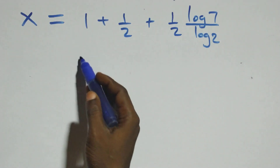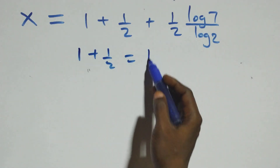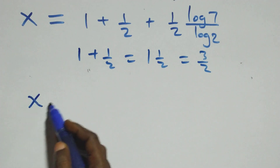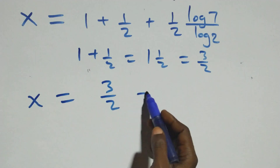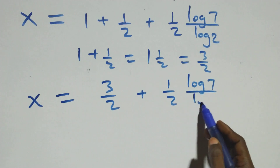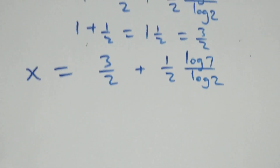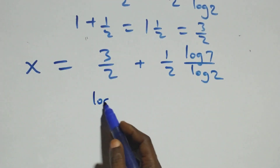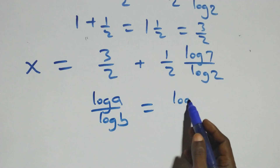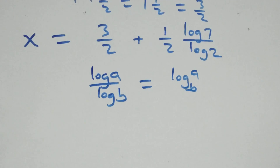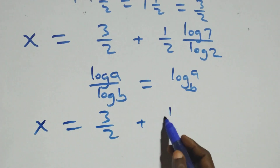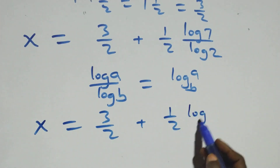Next step, 1 plus 1 over 2 is the same as 3 over 2. So what we have becomes x equals 3 over 2 plus 1 over 2 multiplied by log 7 over log 2. Then we apply the change of base rule: log a over log b is the same as log a to base b. So here we have x equals 3 over 2 plus 1 over 2 times log 7 base 2.